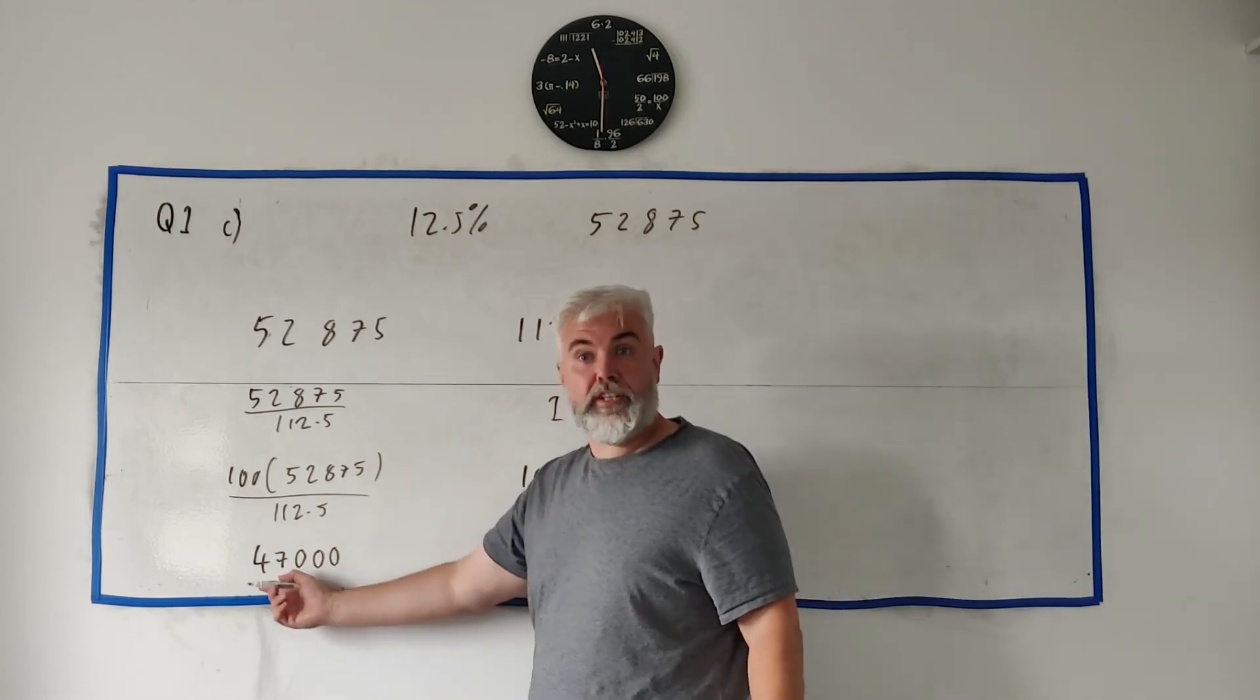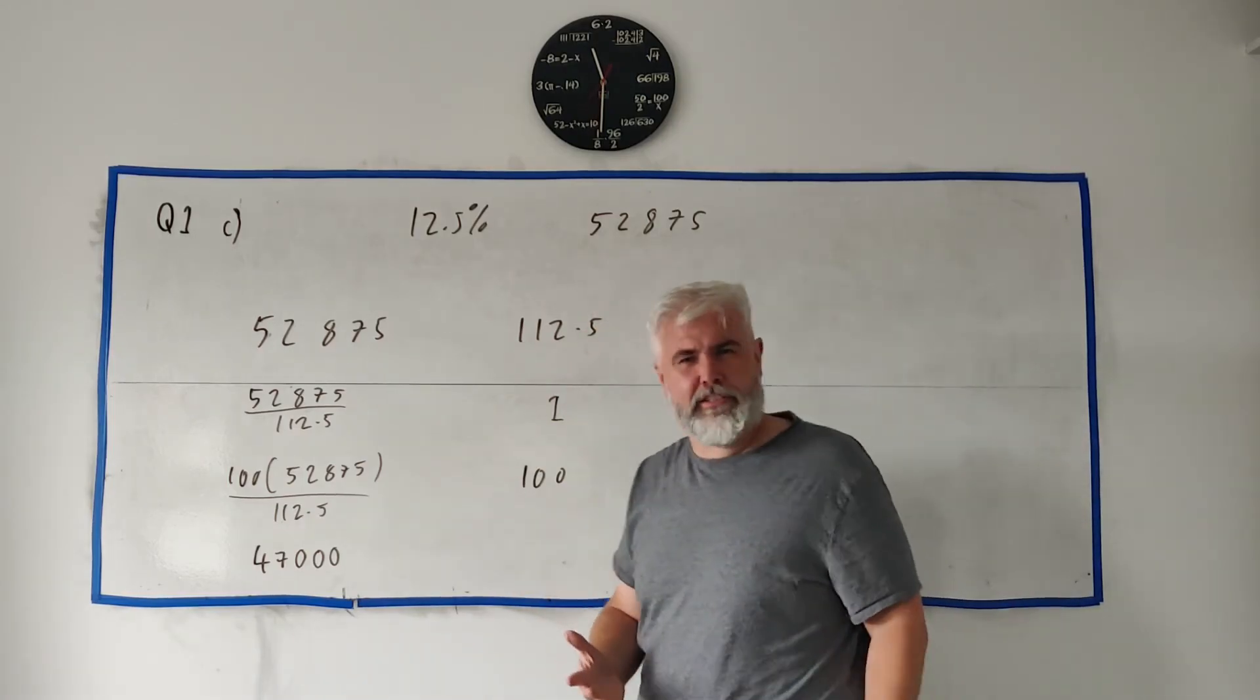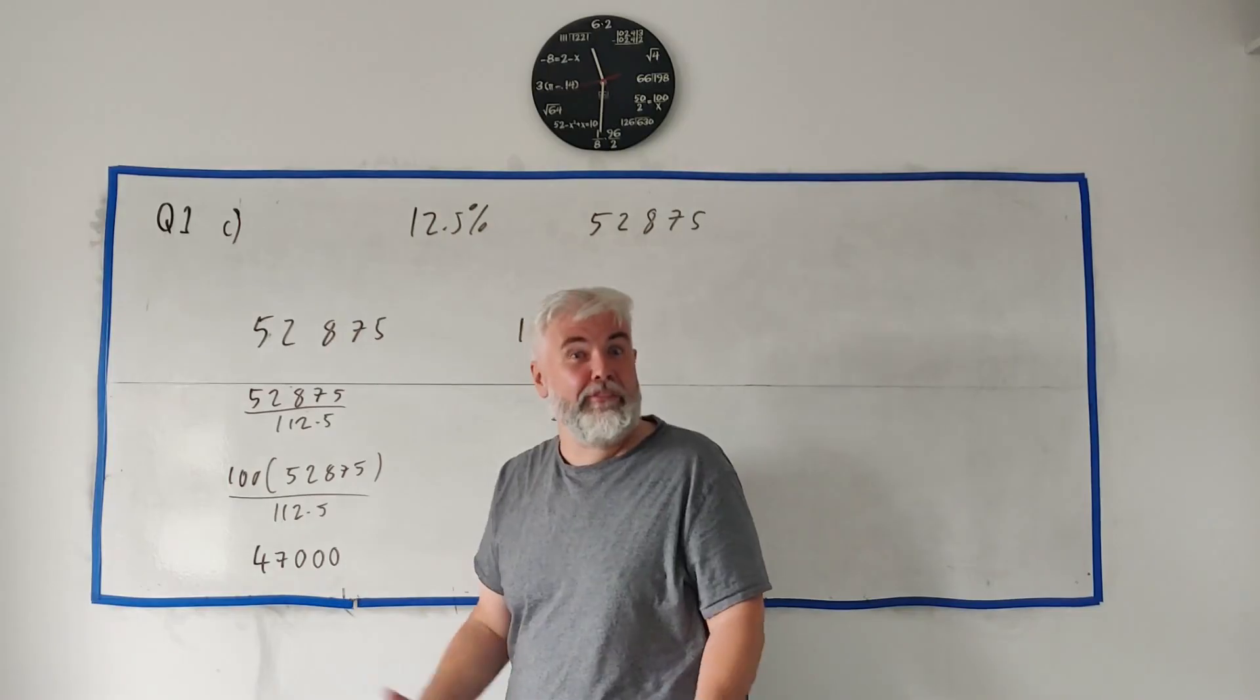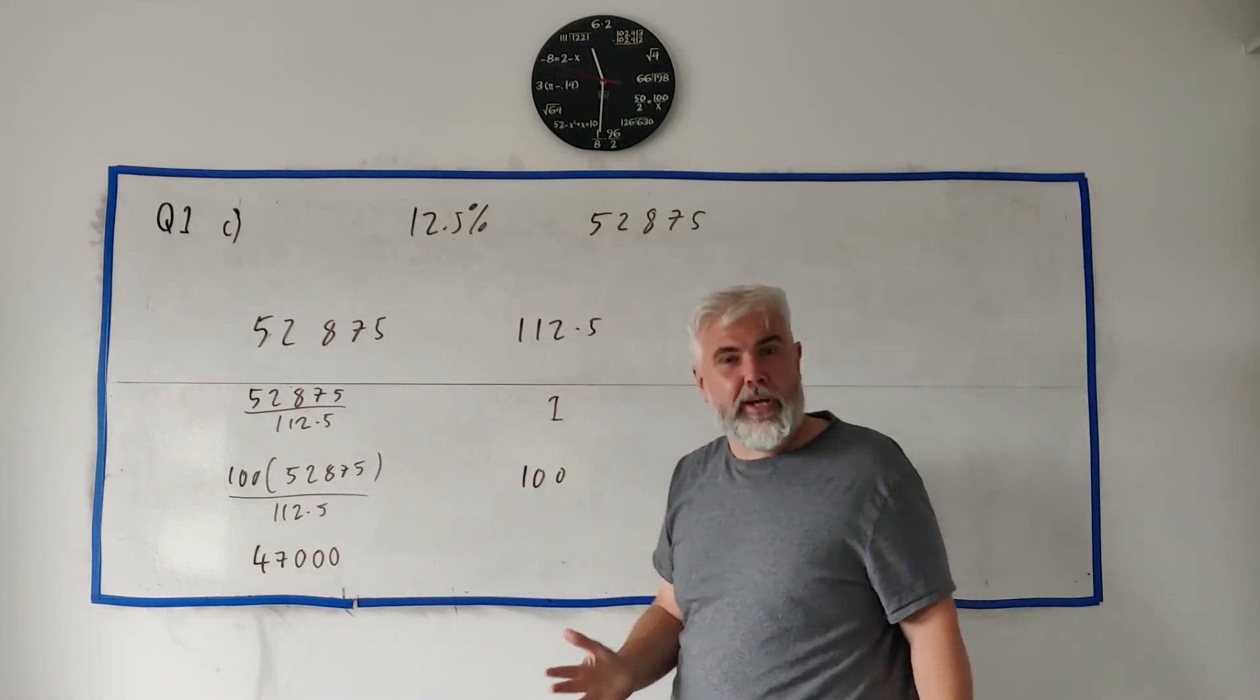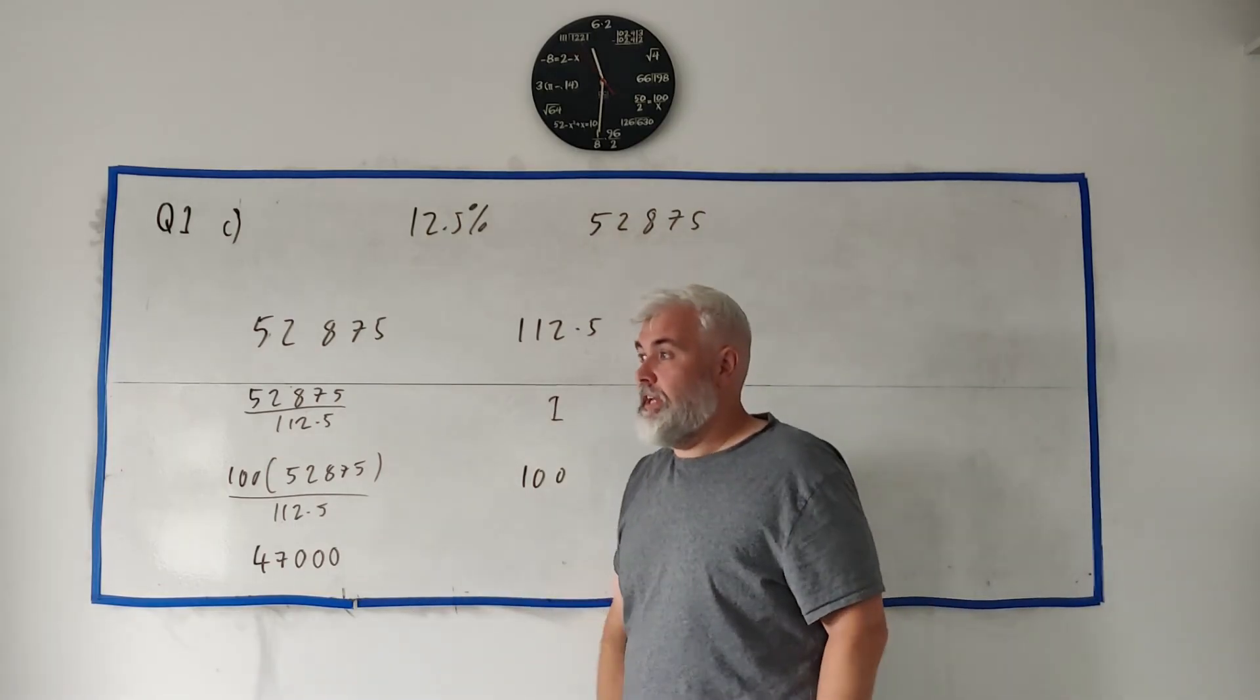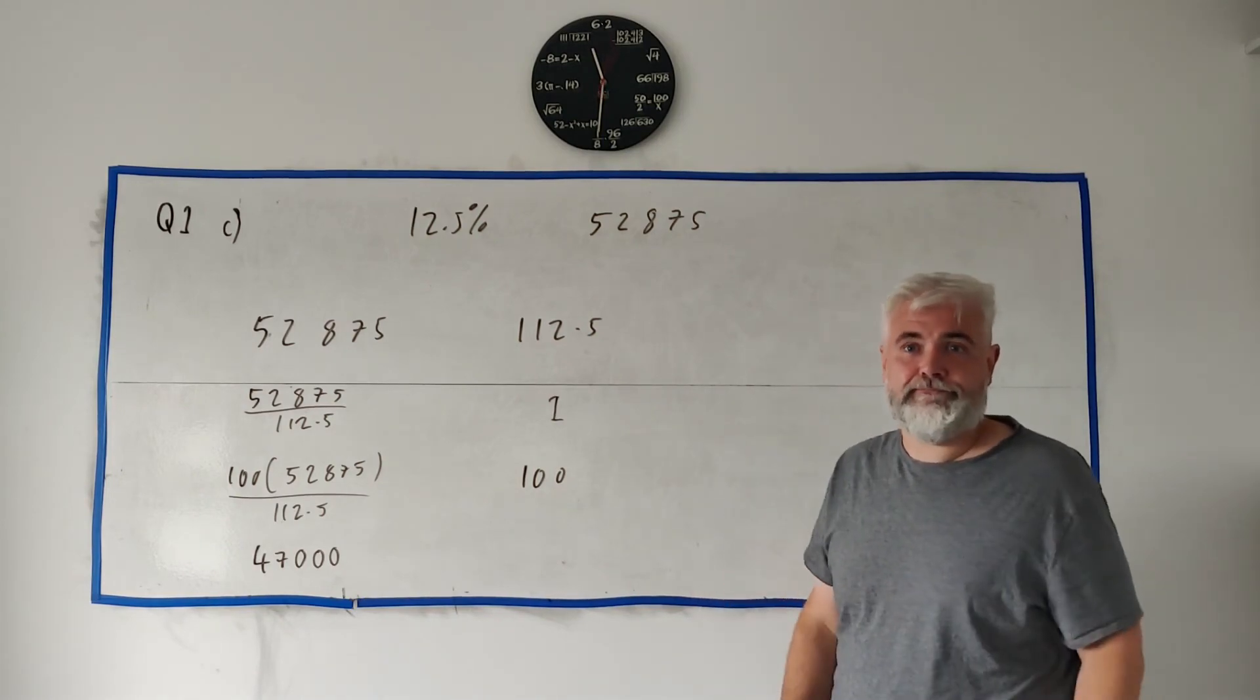I'll always double check your answer with a bit of common sense. If the price started at 47,000 and it's gone up 12.5 percent that should be about 52, that feels about right doesn't it? 10 percent of this should be about 4,000, should be 4,700, so a bit more than that maybe 5,000, 5,000 more than this is 52,000, yeah it seems about right it makes sense. So many students start with this and maybe get an answer over 60,000, they should know they're wrong there, always use common sense at the end to check if you're right.